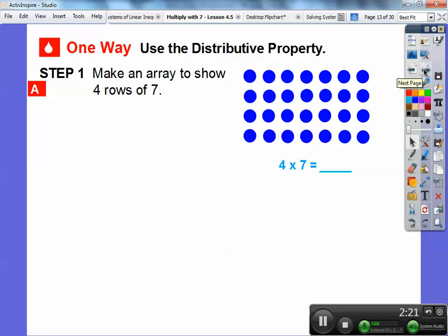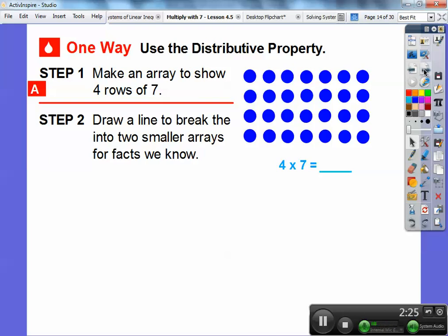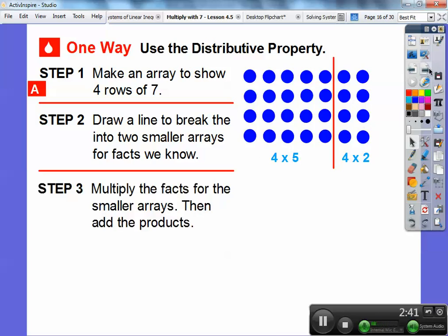We know it's twenty-eight already, but what we can do is take that array right here and draw a line to break this into two smaller arrays for facts that we may know. If we drew a line, let's say right there, and made it four rows of five right here and then four rows of two. And four times five will get us twenty. We'll multiply the smaller arrays and then add those products.